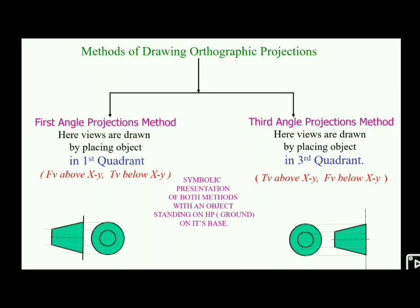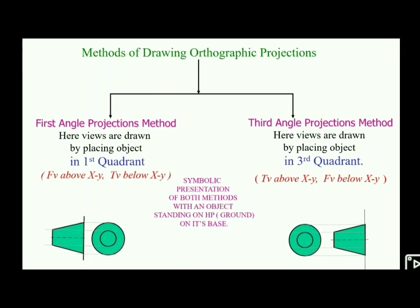In the first angle projection, we place the object in the first angle position. The first angle position is on the left side, along the main line. In first angle projection, the object is placed between the observer and the plane of projection.